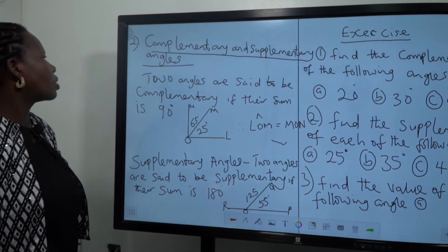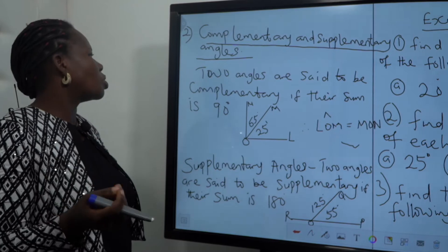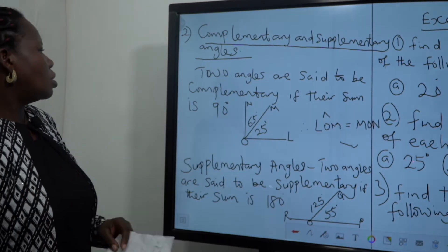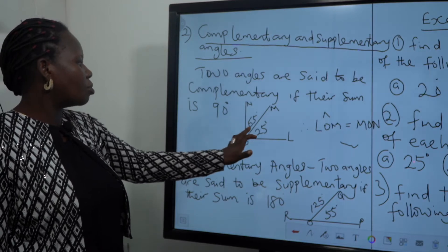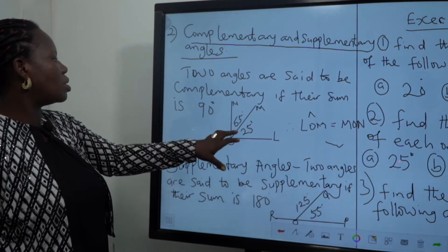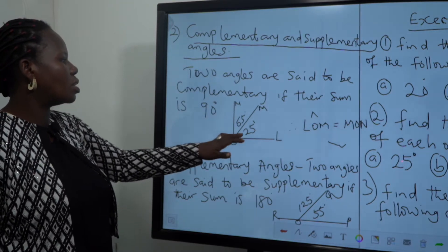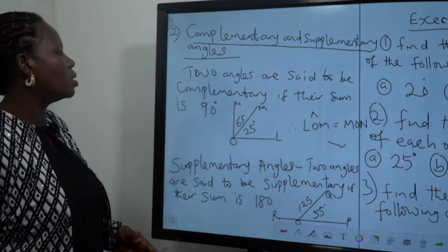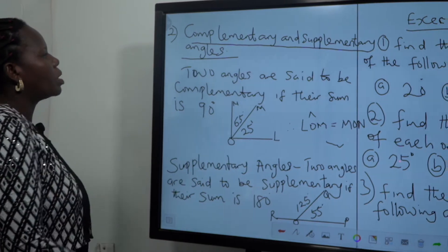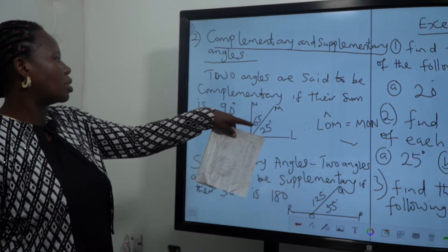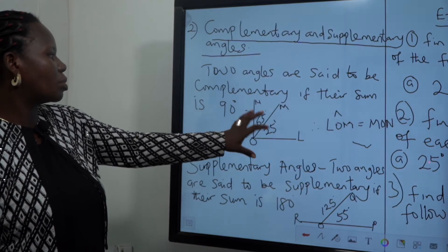Moving on to the next property: complementary and supplementary angles. Complementary angles are when two angles have a sum of 90 degrees. Looking at the board, we have an angle bisected into angle LOM and angle MON. To get 90 degrees, you sum the two angles: 65 plus 25 gives us 90. So this is called a complementary angle — when you add two angles to get 90 degrees.